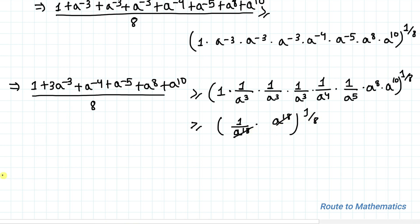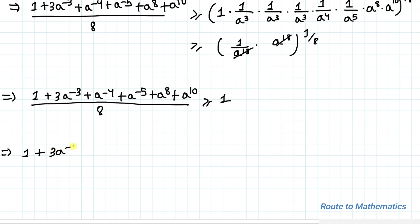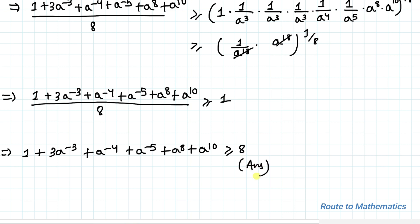So we have 1 plus 3a^(-3) plus a^(-4) plus a^(-5) plus a^8 plus a^(10), divided by 8, must be greater than or equal to 1. This implies 1 plus 3a^(-3) plus a^(-4) plus a^(-5) plus a^8 plus a^(10) is greater than or equal to 8. So the minimum value of this given expression is 8. I hope you have understood the solution. Thanks for watching — please subscribe to my channel and hit the like button for more such interesting videos. Thank you.